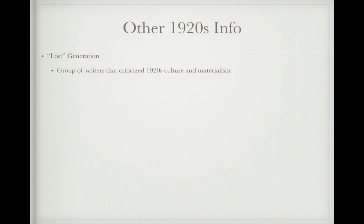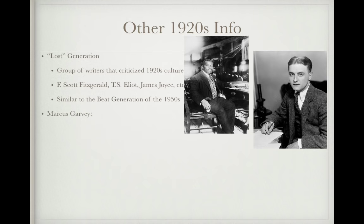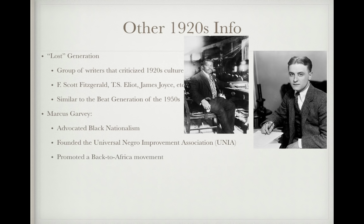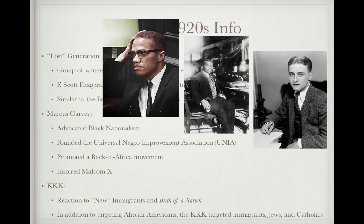The Lost Generation was a group of writers who criticized 1920s culture and materialism, including F. Scott Fitzgerald (The Great Gatsby), T.S. Eliot, and James Joyce — similar to the Beat Generation of the 1950s. Marcus Garvey advocated Black nationalism and separatism, founded the Universal Negro Improvement Association (UNIA), and promoted a Back to Africa movement. His ideas would later inspire Malcolm X in the 1960s. The KKK re-emerged during this time, targeting African Americans, immigrants, Jews, and Catholics, partly fueled by the film Birth of a Nation.